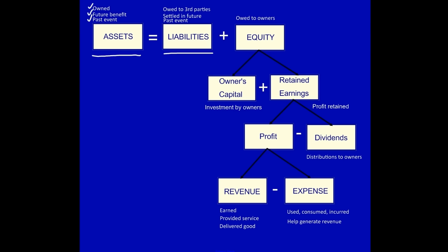Liabilities: they are owed to third parties. They have to be settled in the future — that's either going to be paid in cash, goods, or services — and they are due to a past event. Equity is what is owed to the owners by the business. Owner's capital: that's the investments that the owners have made in the business. Retained earnings: that is the profit kept in the business for future expansion. Dividends: that's when we pay part of the profit to the owners.